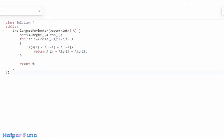Now let's quickly look at the code. We are given the vector A representing the lengths of the sides of the triangle. First, we sort this vector